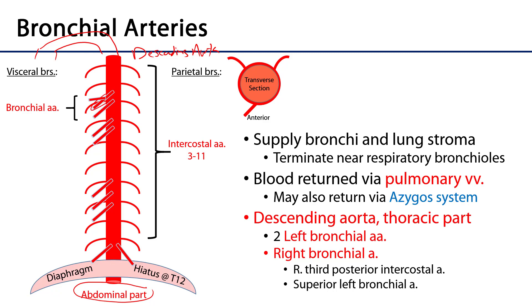We can see the two left bronchial arteries here. There are two left bronchial arteries and one right bronchial artery. That right bronchial artery is quite variable in its origin — most typically it's a branch of the right third posterior intercostal artery. Recall that the posterior intercostal arteries are the dominant blood supply to the intercostal space. The right bronchial artery can come off the third right posterior intercostal artery, or it may be a branch of the superior of the two left bronchial arteries, or it can come off of nearly any other artery in this vicinity.